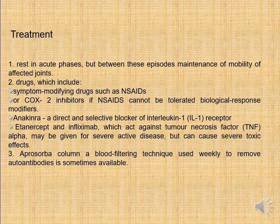Treatment of rheumatoid arthritis begins with rest in the acute phase, but between episodes, maintenance of joint mobility should be encouraged. Drug treatment includes symptom-modifying drugs such as NSAIDs, COX-2 inhibitors if NSAIDs cannot be tolerated. Biological response modifiers include anakinra — a selective blocker of the interleukin-1 receptor — and anti-TNF agents such as etanercept, which act on tumour necrosis factor alpha but may cause severe toxic effects.